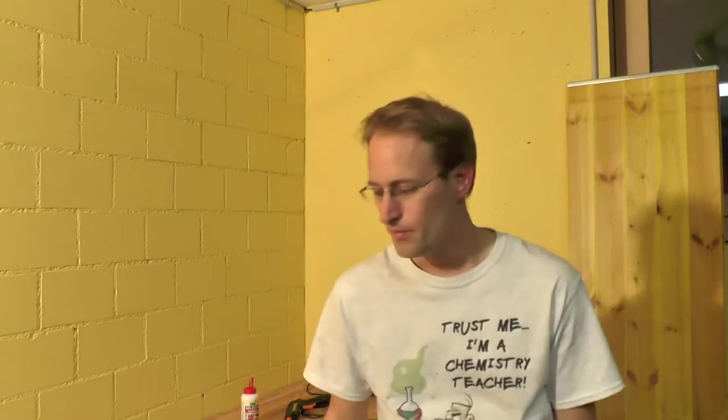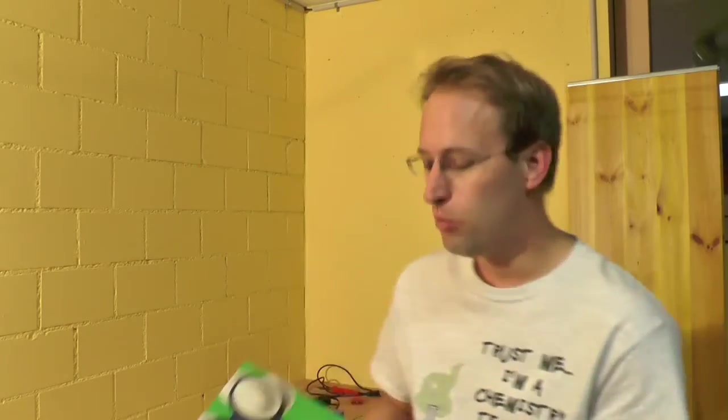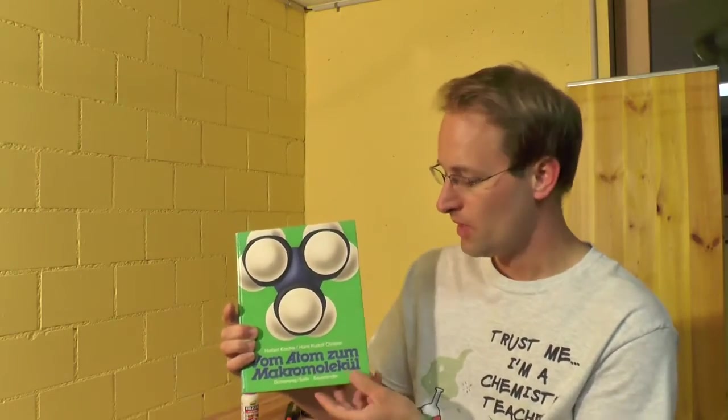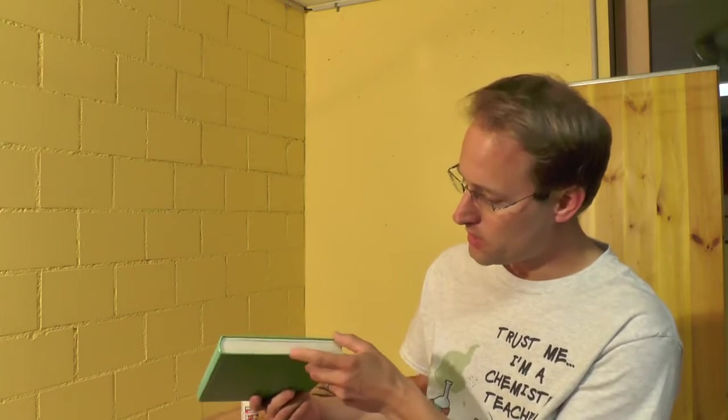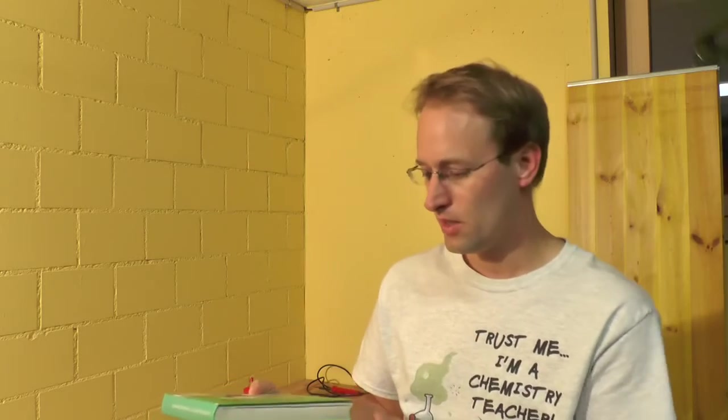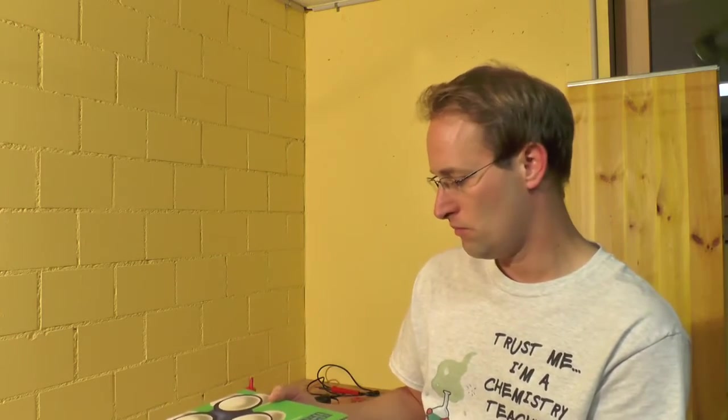Now before you can begin, there are quite a few things you need. First obviously a book, and of course chemistry books work best. Now the book has to be at least two and a half centimeters thick because the electronic is two centimeters thick. That makes two and a half the minimum.